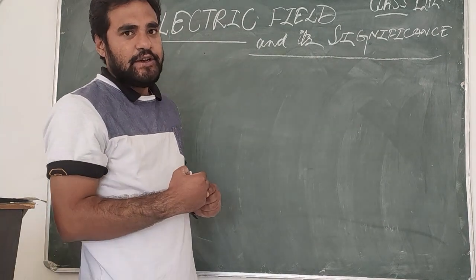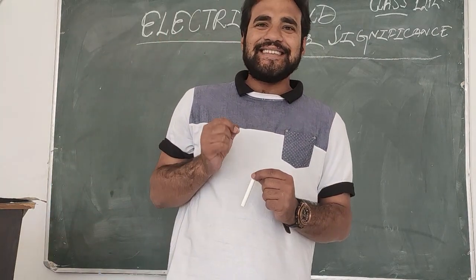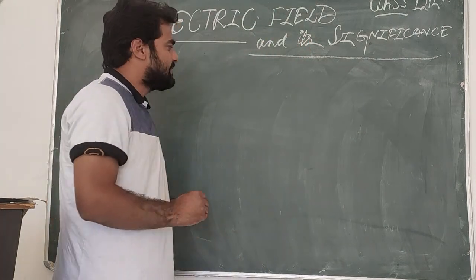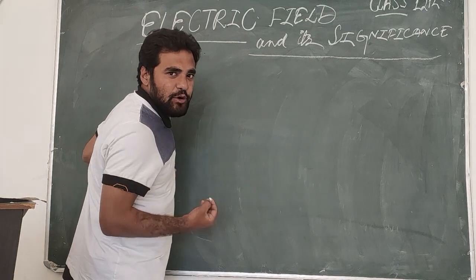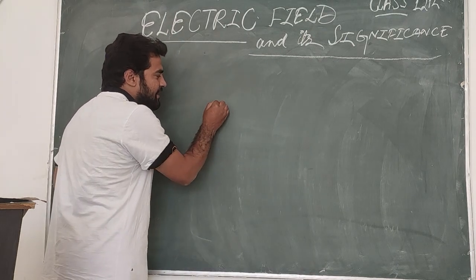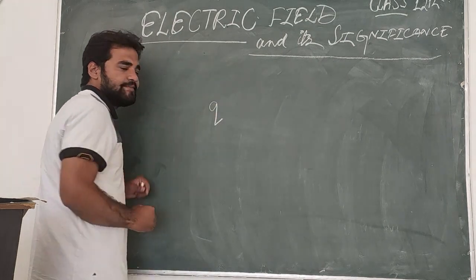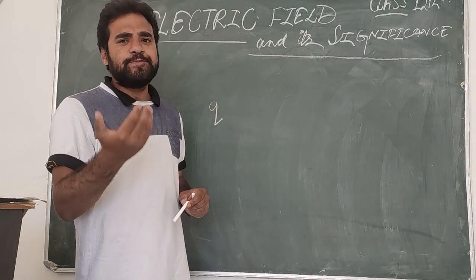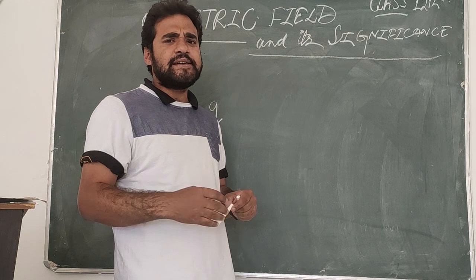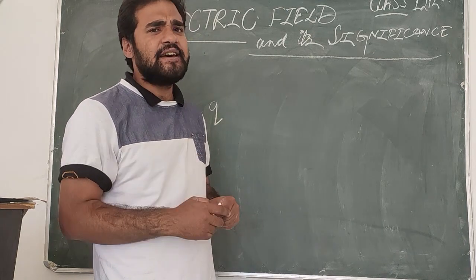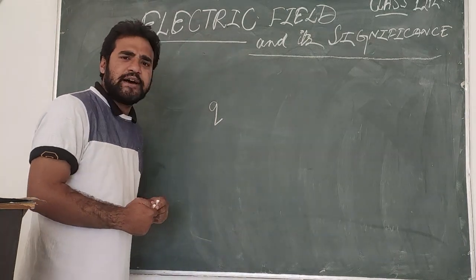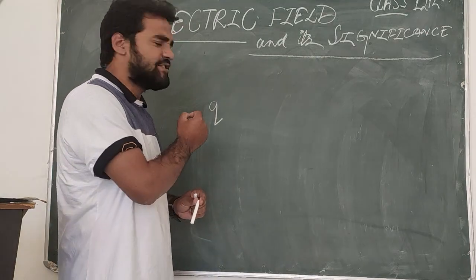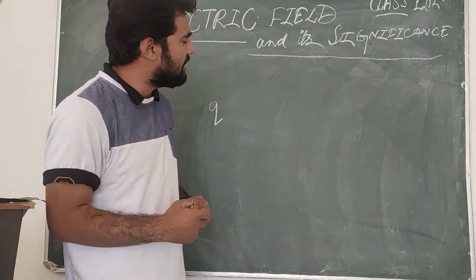What is Electric Field? As you know, we denote the charge by Q. Charge is denoted by Q. Some books use capital Q, some use small q — it doesn't matter, you can use either small q or capital Q.